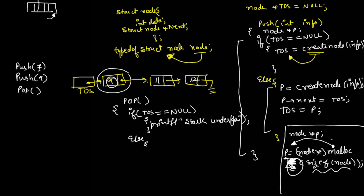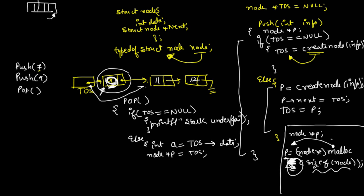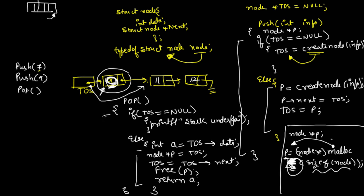If the stack is not empty, we store the data: int a equals top-of-stack->data. Then we take a pointer node star p equals top-of-stack, move top-of-stack forward with top-of-stack equals top-of-stack->next, call free(p) to release the memory, and finally return a. The return type of the pop function is int.